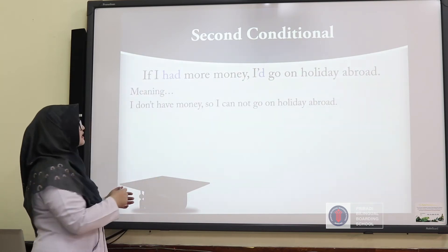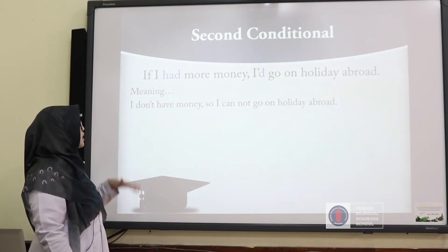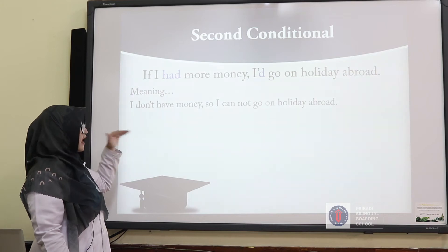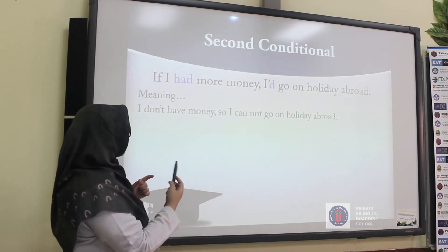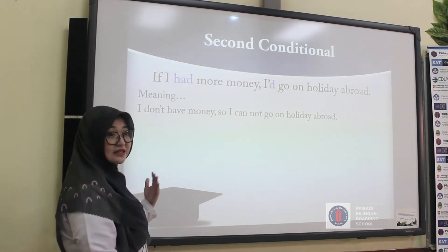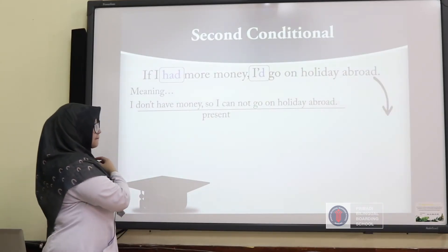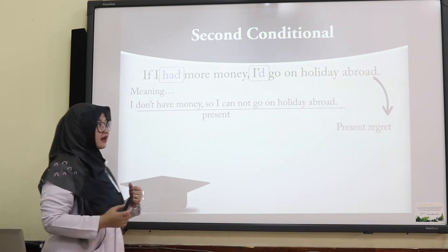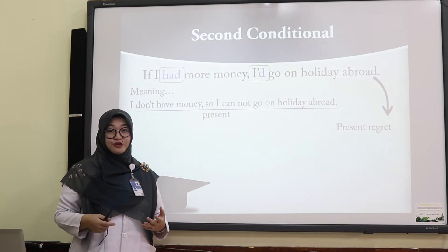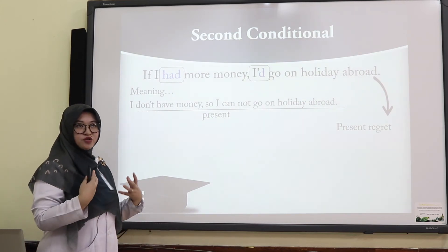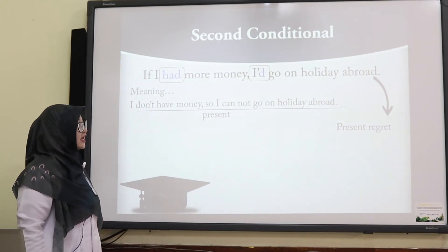Let's look more deeply into the second conditional. 'If I had more money, I would go on holiday abroad.' This sentence has the meaning: 'I don't have money, so I cannot go on holiday abroad.' So the conditional sentence uses the past form, but the meaning refers to the present. This is what I'd like to call a present regret — when you want something different in the present time and you regret it, you use the second conditional to express it.